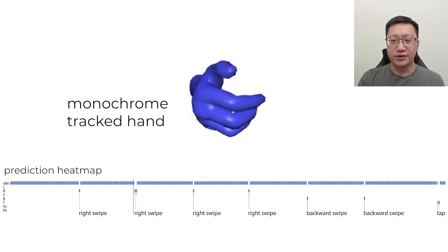Taking the earlier example sequence, a model trained on monochrome hand tracking produces this prediction heat map.